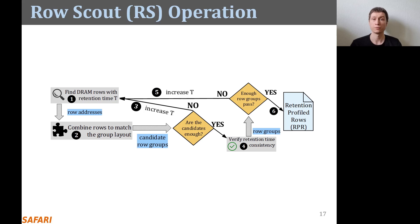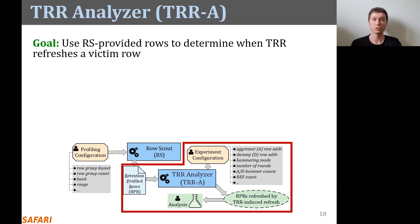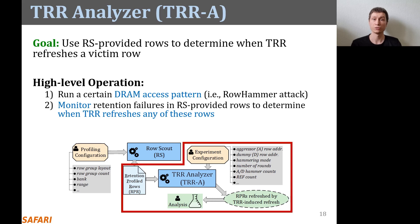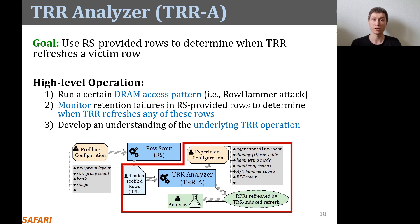I will now describe the operation of TRR analyzer. The goal of TRR analyzer is to use Rolescout-provided rows to determine when TRR refreshes a victim row. At a high level, TRR analyzer operates in three steps: it runs a certain DRAM access pattern, or RowHammer attack; it monitors the retention failures that the Rolescout-provided rows experience to determine when TRR refreshes any of those rows; and based on when and which rows are refreshed by TRR, the user develops an understanding of the underlying TRR operation.